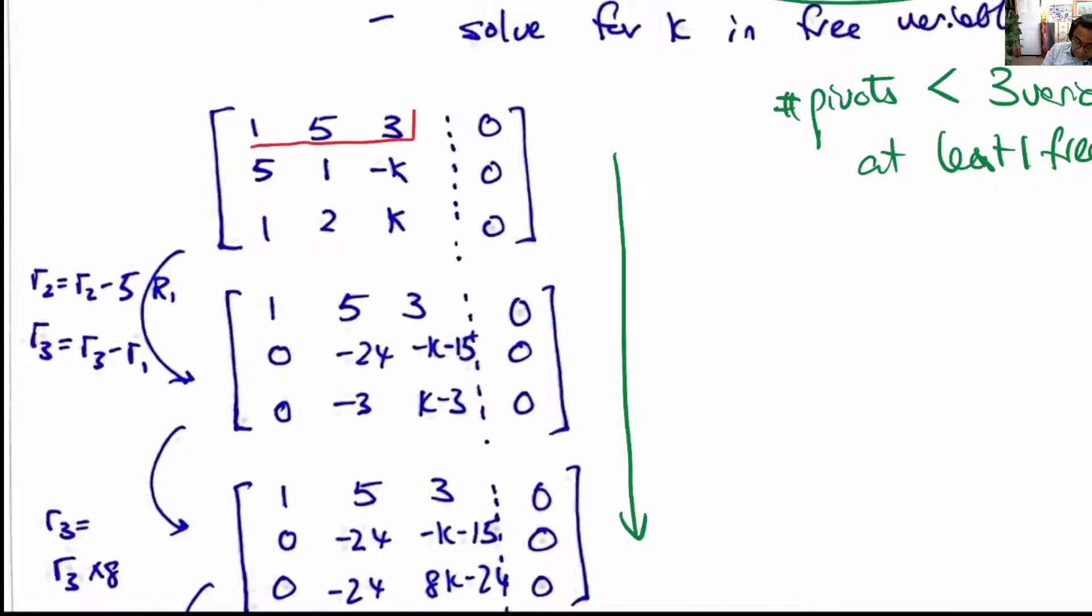We take this as the first row, we call it R1. This is the second row, we call it R2, and we apply this rule: R2 equals R2 minus 5 times R1.